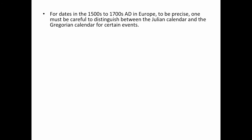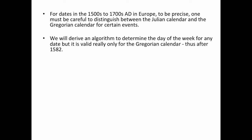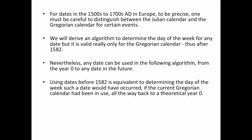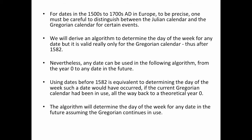For dates in the 1500s to 1700s AD in Europe, one must be careful to distinguish between the Julian calendar and the Gregorian calendar for certain events. We will now derive an algorithm to determine the day of the week for any date, but it is really valid only for the Gregorian calendar, and therefore really only after 1582. Nevertheless, any date from year zero anywhere into the future can be used in the following algorithm. Using dates before 1582 is equivalent to determining the day of the week such a date would have occurred if the current Gregorian calendar had been in use all the way back to a theoretical year zero. We're going to be given a year Y, a month M, and a day D.